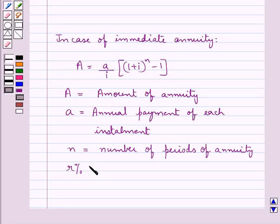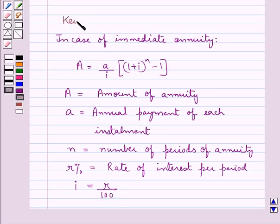R% is the rate of interest per period and this i is equal to R upon 100. This is the key idea that we use in this question.